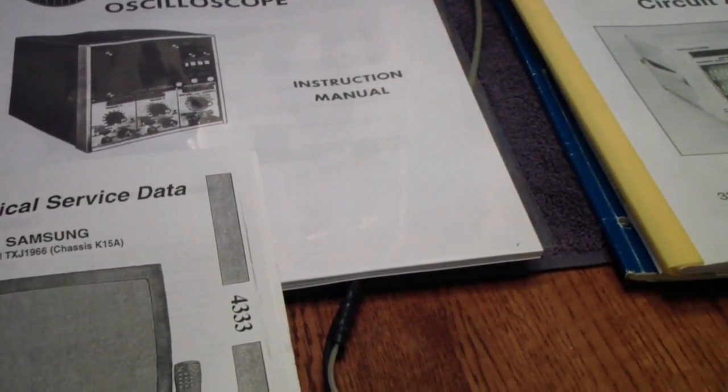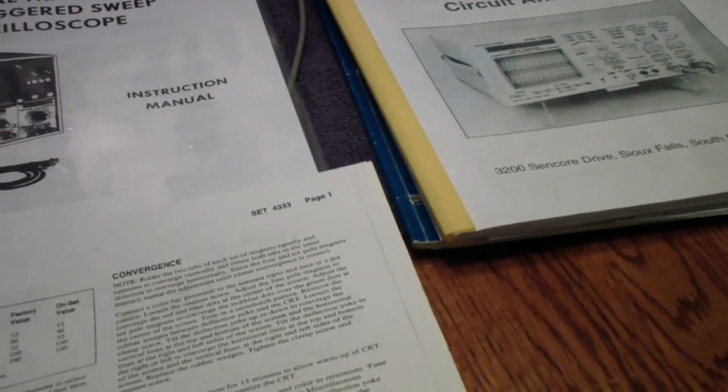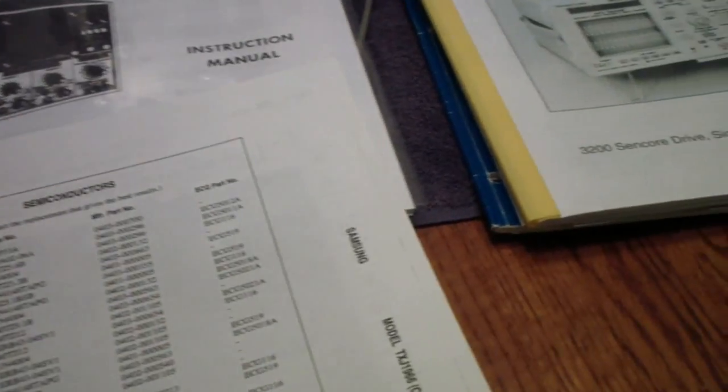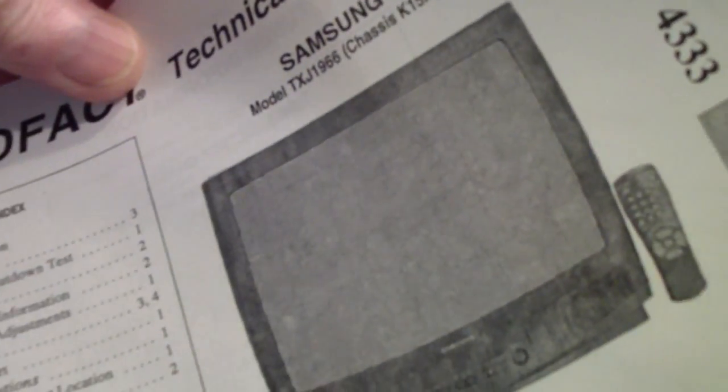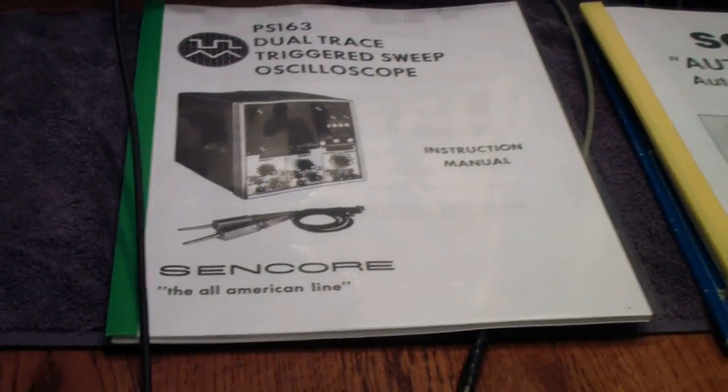Now transistors started becoming prevalent. Eventually televisions came to have integrated circuits. This is a later, I forgot to look at the date on this, August of 2000. This is a Samsung television, by the way, which I also own. That's why I have this service literature, these are sets that I've owned over the years. I would always buy a service manual when I bought the set. So when it went out, because it always would, I at least had something to work with.